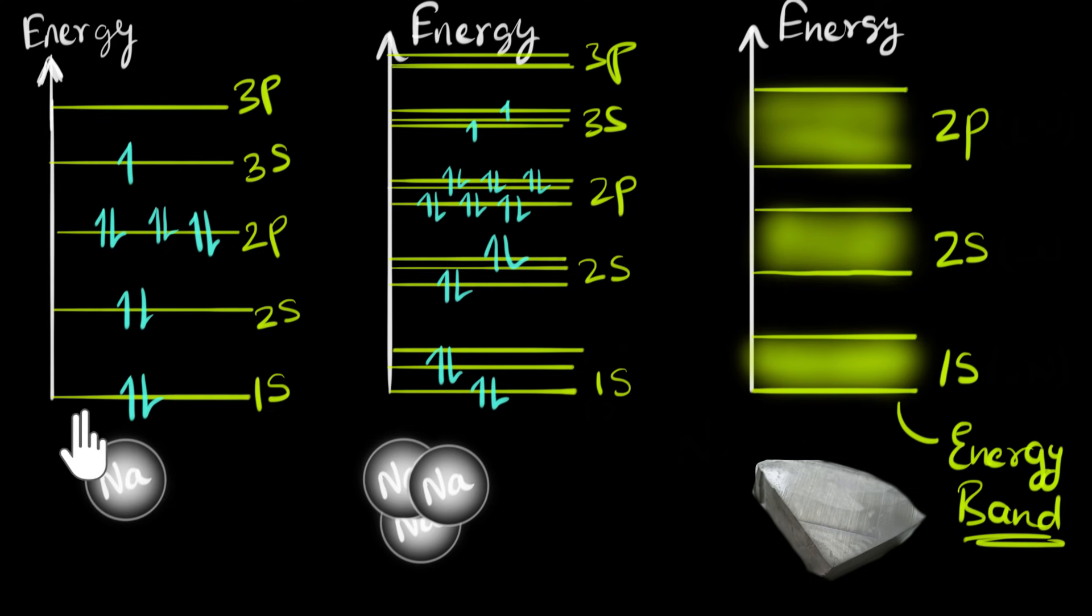Notice that since one discrete level can hold two electrons, if there are n atoms, there will be n levels. So the total number of electrons it can fit would be 2n. This band can fit 2n electrons, and the 2s band can also fit 2n electrons. But a single p level can fit 6 electrons, so the 2p band can fit 6n electrons, and so on.